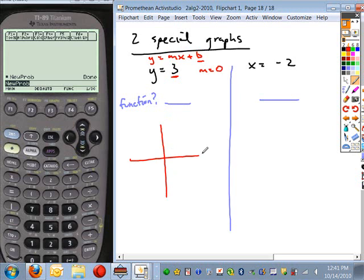If you looked at this, you have a y-intercept of 1, 2, 3. The slope of 0 means that there's no rise, 0 rise, but there is positive or negative run. So here is the graph of y equals 3.